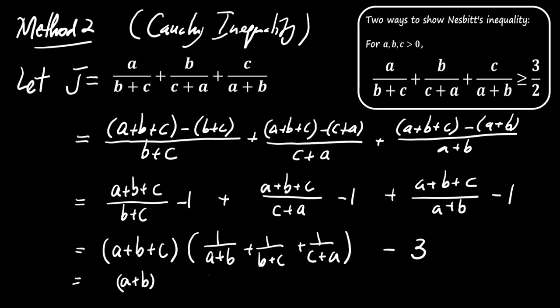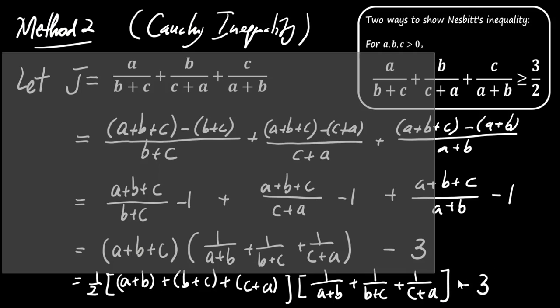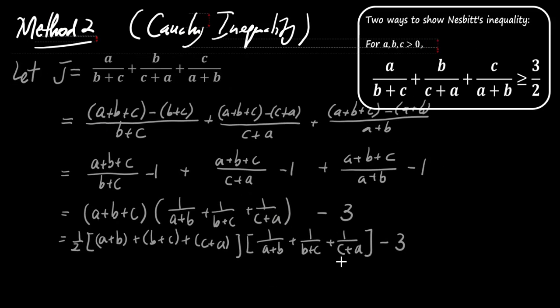Now, we apply the Cauchy-Schwartz inequality. Cauchy-Schwartz tells us that 1 over A plus B plus 1 over B plus C plus 1 over C plus A times A plus B plus B plus C plus C plus A is greater than or equal to 9.